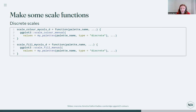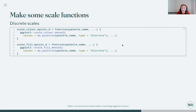Now we can make our scale functions. For discrete colors, these are just a wrapper around the scale_manual functions, passing in the palettes function to the values argument. One important thing is adding the ellipses, which means you can use any arguments that apply to scale_manual in your new custom scale functions as well — you inherit those arguments. So if you want to change the legend name or set the limits of the scale, you can still do that with the new scale_color_mycols function.